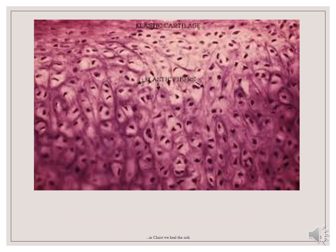This is also another slide of the elastic cartilage. We can see the numerous chondrocytes and then the network of fibers appearing in black across the matrix between the chondrocytes. As you can see here, you can see the dark appearance of fibers across this matrix.